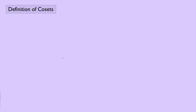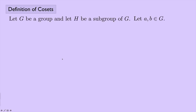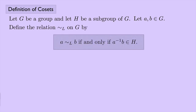In this video I want to talk about cosets. Cosets end up being very important in abstract algebra, but before we get to cosets, let's talk a little bit about where they come from. Let G be a group, and let H be a subgroup of G, and we're going to let A and B be elements of G. We're going to define a relation — call this tilde-L, a relation L on G — and we're going to say that A is related to B if and only if A inverse B is an element of H.